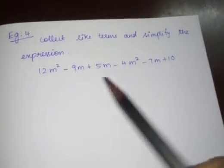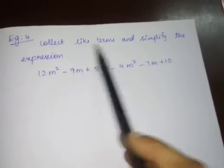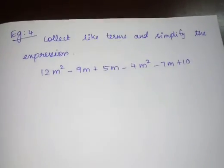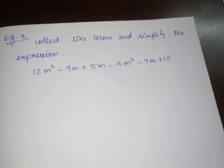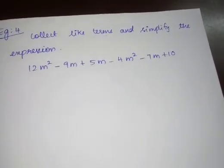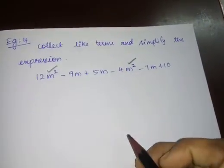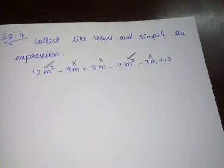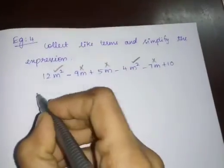This is your Example 4. The instruction is: collect like terms and simplify the expression. Whenever you are simplifying an expression, you should collect all the like terms first, then separate the unlike terms at the last. In this problem, M² and M² are one set of like terms, and the M terms are another set of like terms. We are going to collect all the like terms first, then simplify.